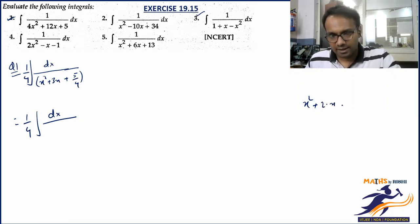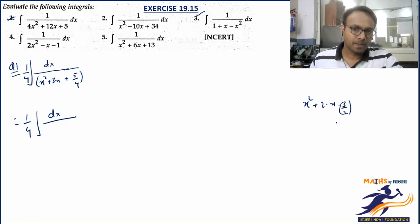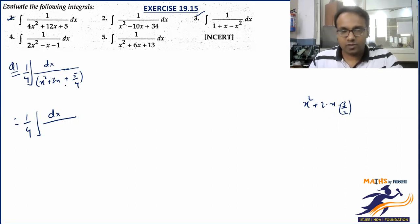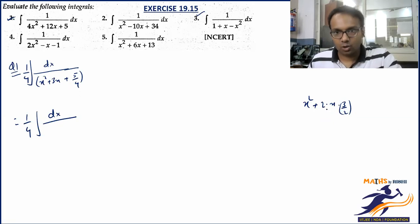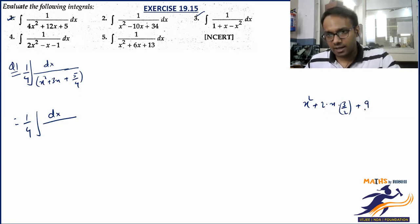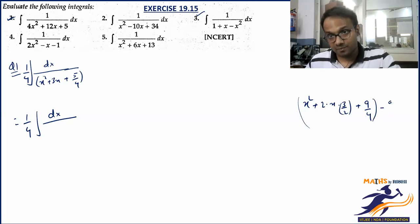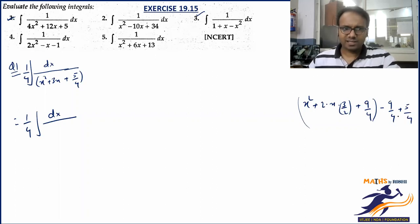You have x² and 3x here. To recreate 2ax, you need b = 3/2. This gives you b. If the x term is positive, this becomes (a + b)² whole square; if the x term is negative, it becomes (a - b)² whole square. So 2ab — a is always x, b has been decided as 3/2. For b², you need 9/4. But in mathematics, if you add anything, you must also subtract it. So I added +9/4 and subtracted 9/4, and the separate 5/4 was already there.